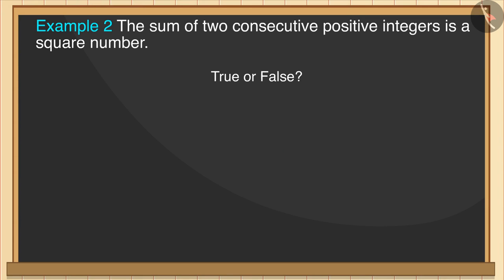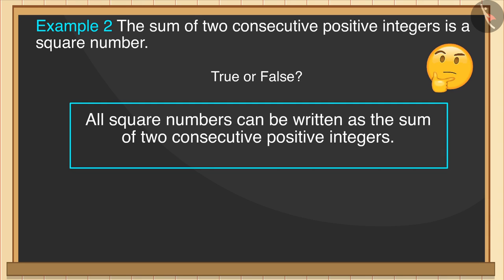Many students assume this sentence to be true. They believe that if all square numbers can be written as the sum of two consecutive positive integers, its inverse will also be true.